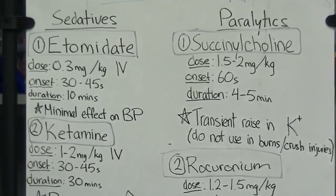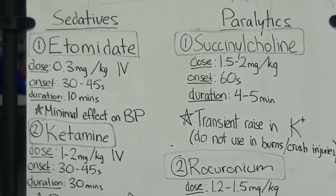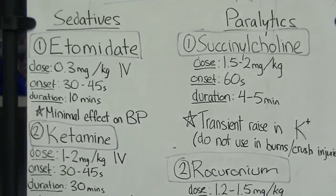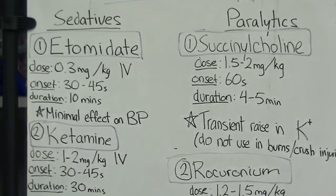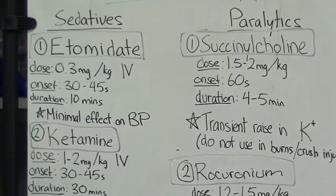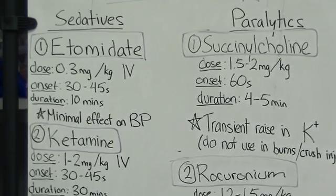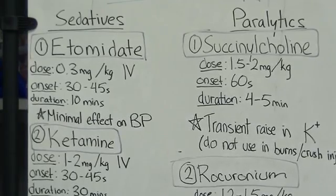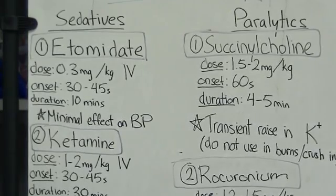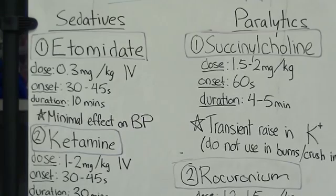Etomidate is useful as it has minimal effects on blood pressure, so it is good to use in hypotensive patients. Another aspect of Etomidate is that it can cause adrenal suppression, which is oftentimes not clinically significant, but you may be pimped on this question.